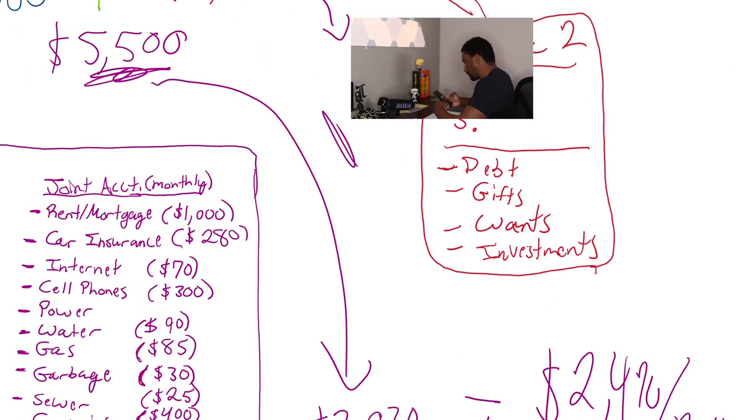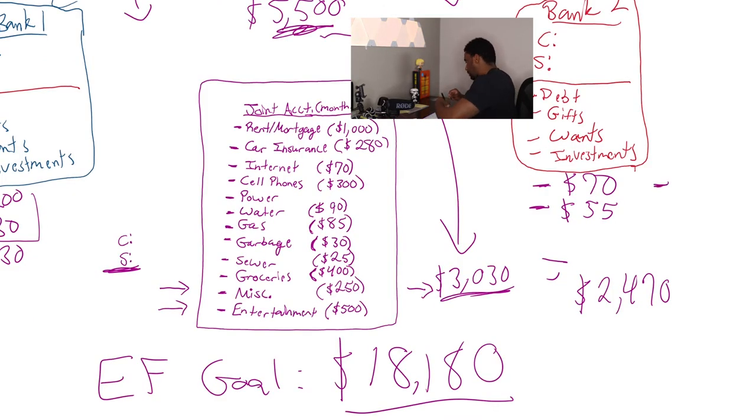So then let's say something that she does every month is gets her hair done. Let's say that costs $70. Let's say she also wants to get her nails done. Well, that's another $55 at least. I'm being modest here, guys, I really am. And let's say that something she wants to do, since she has no debt, she wants to invest $100 in the stock market every single month.